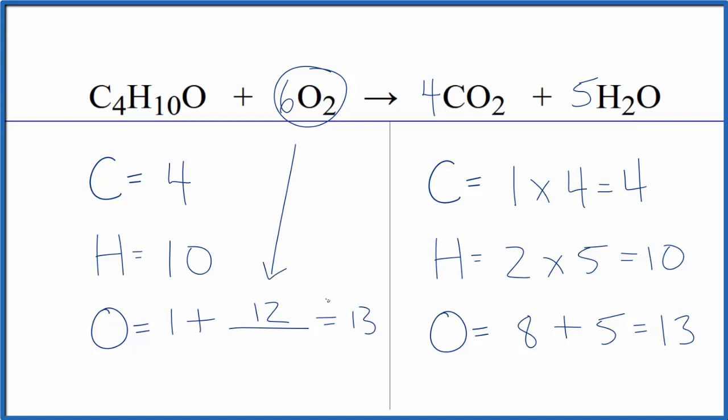One plus twelve equals thirteen. This is the balanced equation here for the C4H10O plus O2. The key here really is to leave the oxygens till last and then kind of think of this as an equation, that's how you'll get the same number of oxygens on each side.